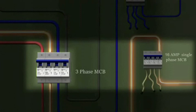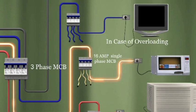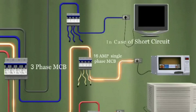In normal circumstances, when the current flows normally from three-phase MCB to 16A single-phase MCB, there is no tripping and no interruption in the current flow. But in case of overloading, our MCB trips, interrupting the current flow. The same happens during short circuit — MCB again trips and interrupts the flow of current.